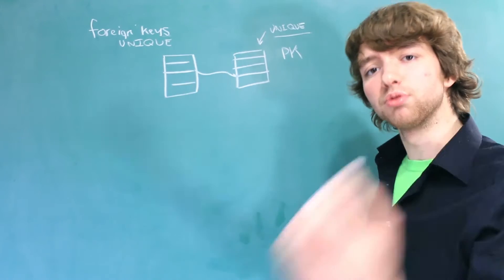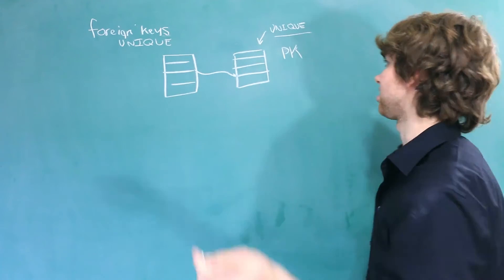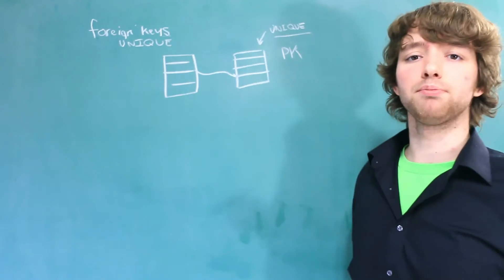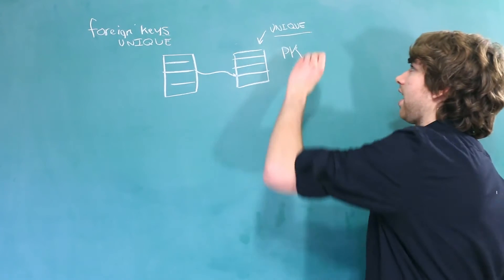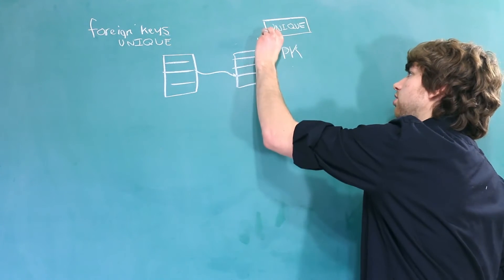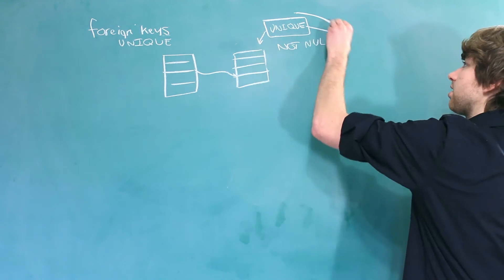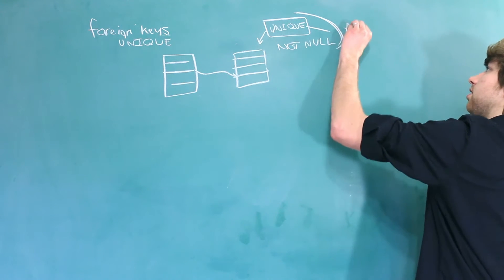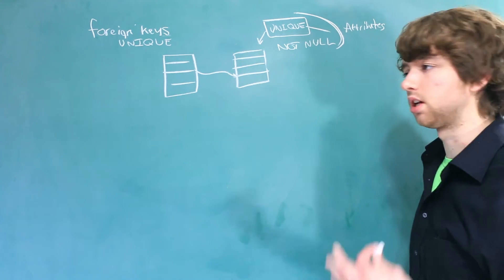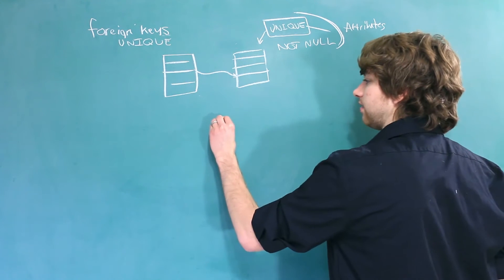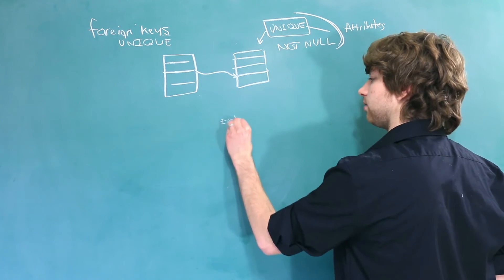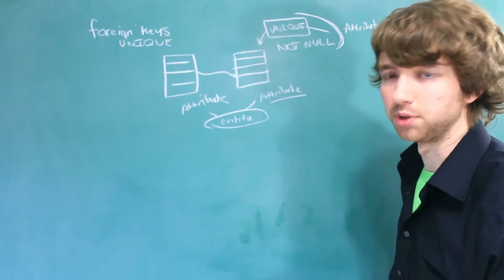So I would recommend you watch the previous two videos, because these discuss primary keys in depth, and we discussed that primary keys have to be unique. Now, the word unique and also the word not null, these are examples of attributes. Now, when I say attributes, I'm not talking about attributes in the sense of entities and attributes. These attributes here are a different type of attribute.